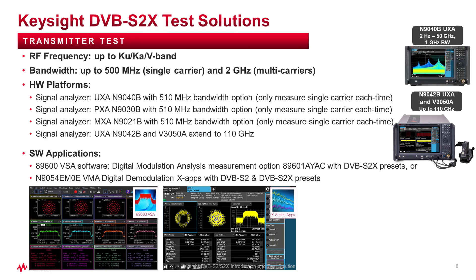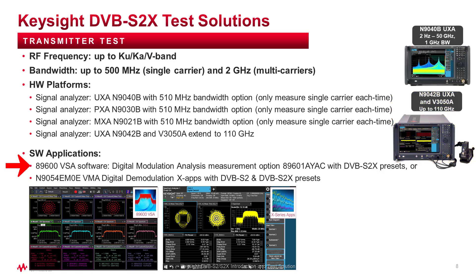For transmitter testing, it needs a signal analyzer with RF frequency up to Ku, Ka, or V-band. Keysight recommends the N9040B, N9030B, or N9021B, which support bandwidth up to 510 MHz and frequency up to 50 GHz. If you need higher RF frequency for V-band, you can select the N9040B UXA plus V3050A frequency extender, which can measure up to 110 GHz. For modulation analysis software, Keysight provides either 89600 VSA with option 89601AOIAC or the N9054EM0E VMA digital demodulation application for DVB-S2 or DVB-S2X measurement.